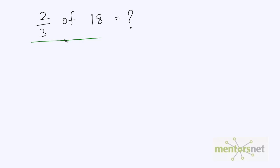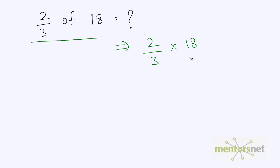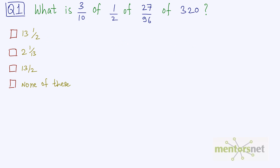In this case, it is two-thirds of 18. What is two-thirds of 18? It means that you have to multiply 2/3 into 18. So this is the literal translation into mathematics of this statement. With this, let us solve our question number 1.